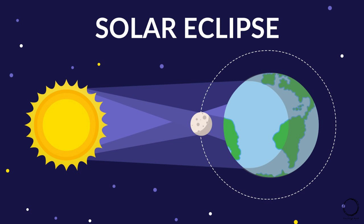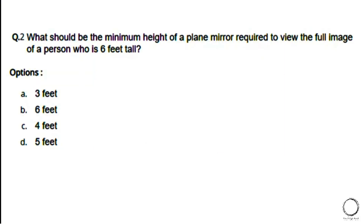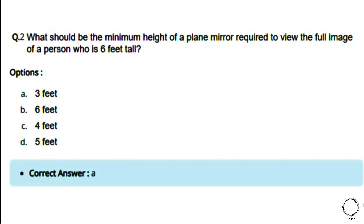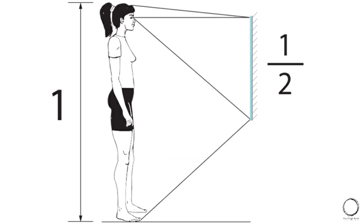Next: What should be the minimum height of a plane mirror required to view the full image of a person who is six feet tall? Options: a) three feet, b) six feet, c) four feet, d) five feet. The right answer is option A — three feet. As you can see in the image, we need half the height of the person.